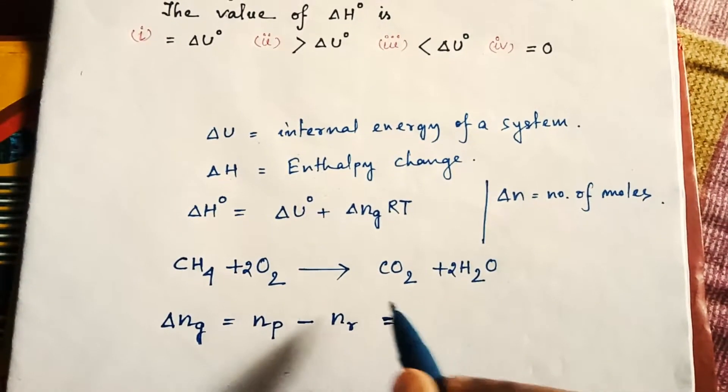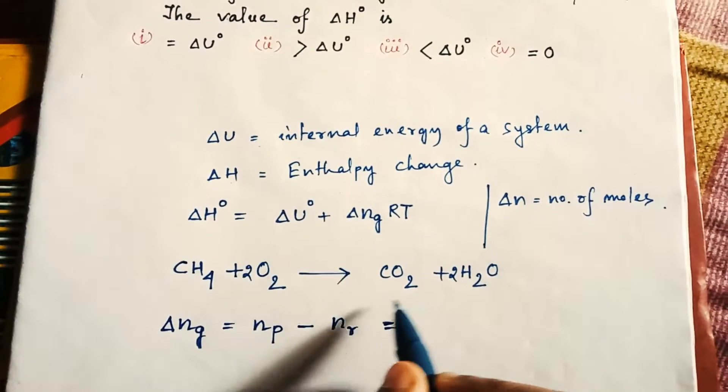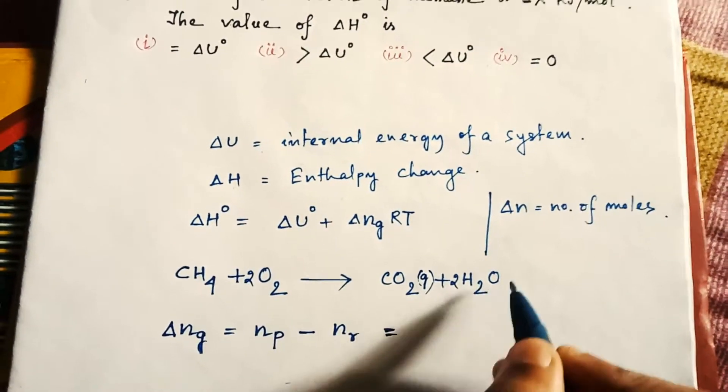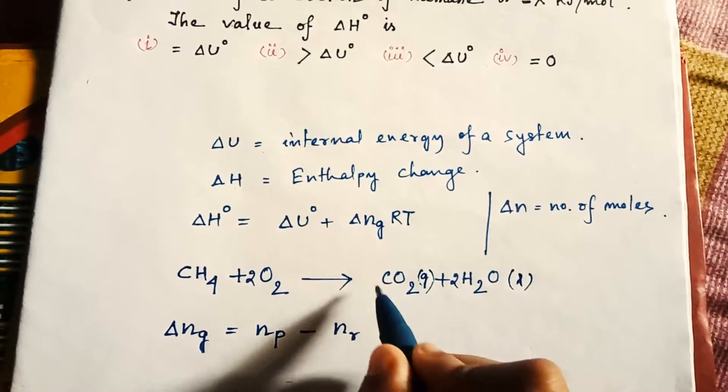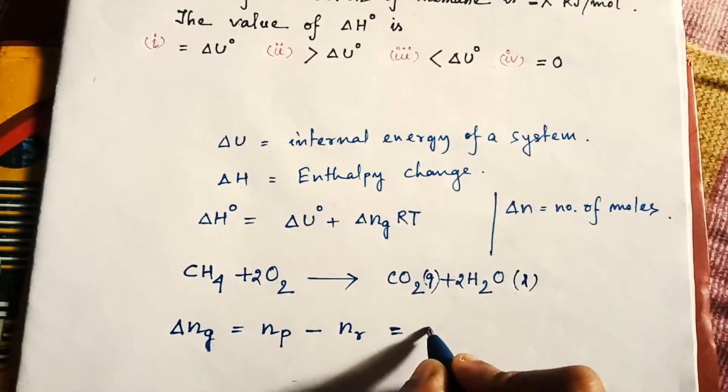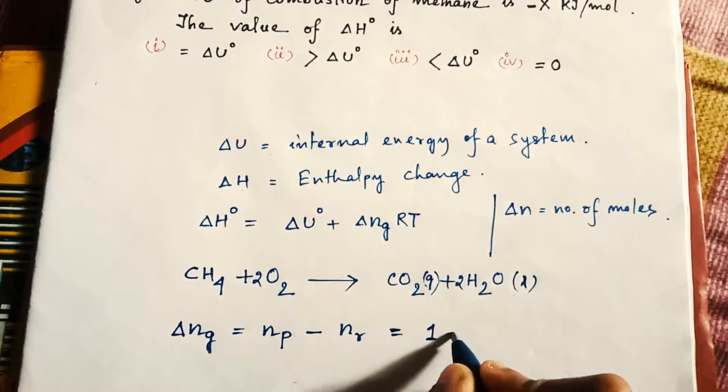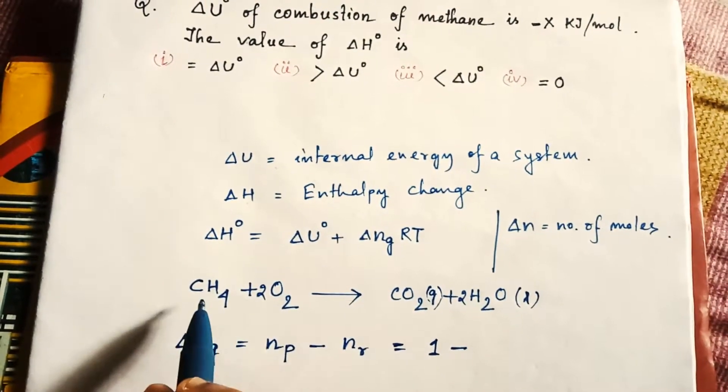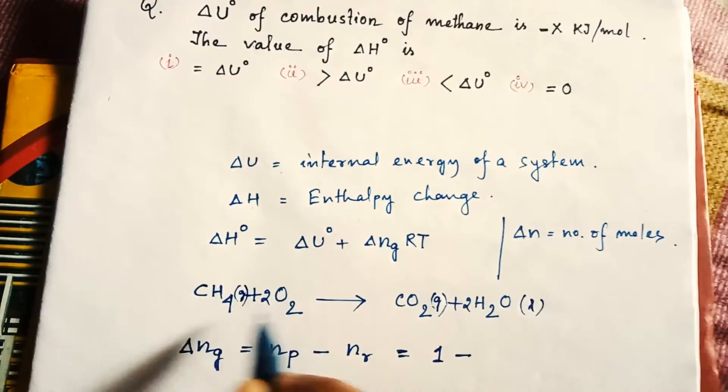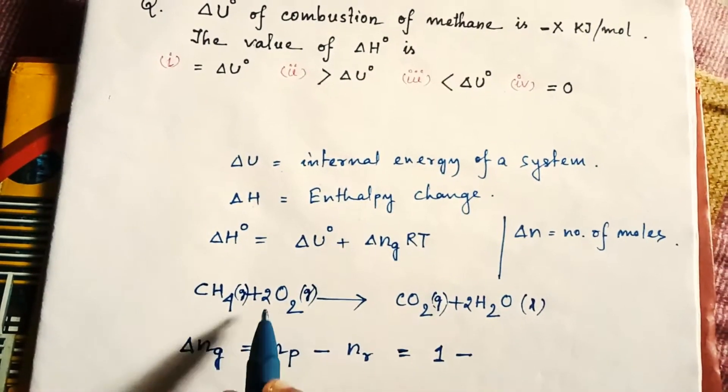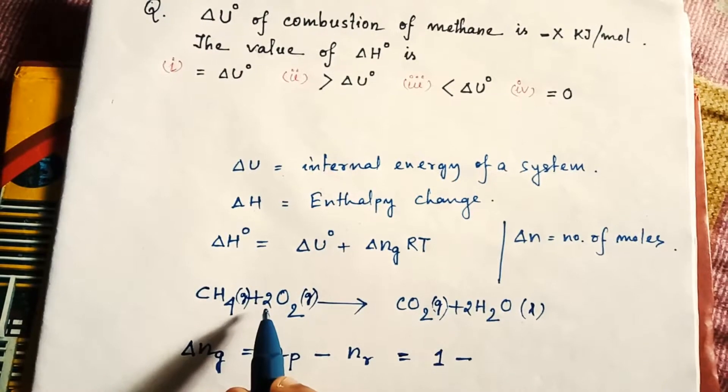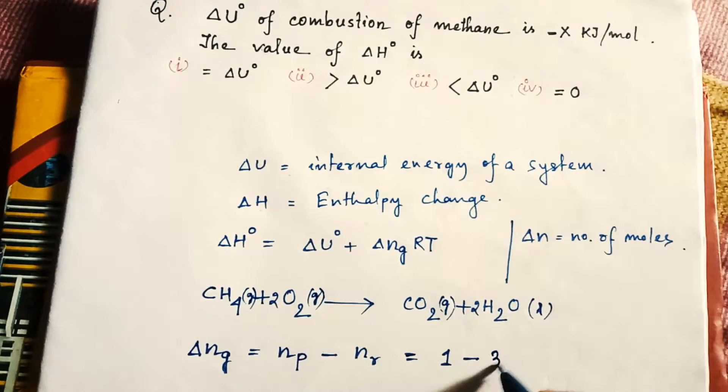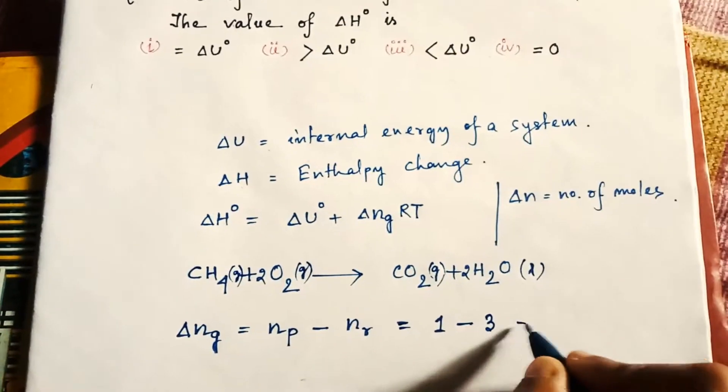In the product part we can see carbon dioxide is the gaseous molecule, water is liquid, so only one carbon dioxide mole is present. So np = 1. Minus in the reactant part, methane is also gas, oxygen is also gas, so two oxygen molecule and one methane, so total three. So here it is three, equal to 1 - 3 = -2.